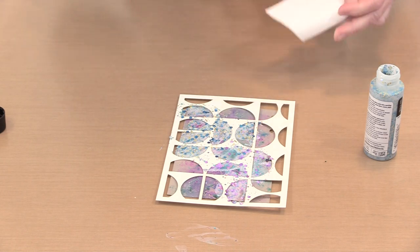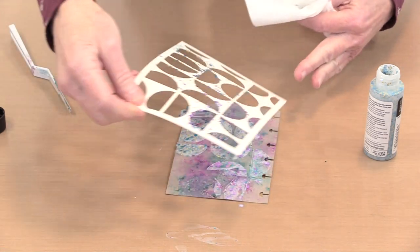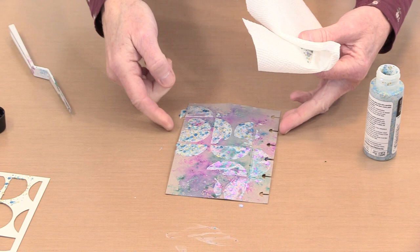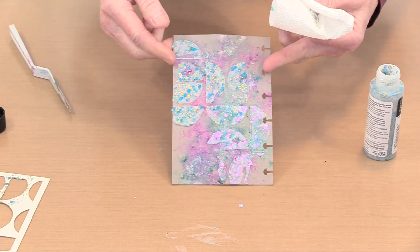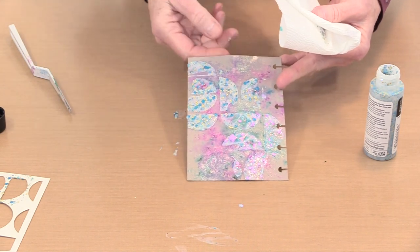Now the thing to keep in mind is that this stuff is permanent when it's dry. So here I've got some color on here. And again, you can see how milky that is to start with, but that will be clear once it dries.